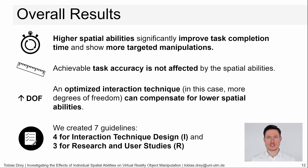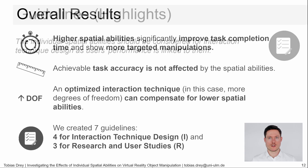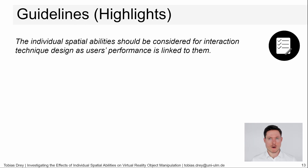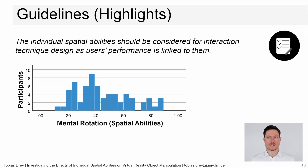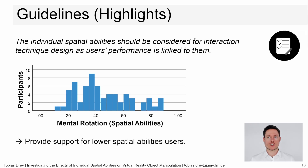Based on our findings, we created seven guidelines, split into four addressing general interaction technique design and implementation, and three for user research. I want to highlight three of them. The first guideline states our main finding: individual spatial abilities should be considered for interaction technique design, as users' performance is linked to them. Despite this being seldom done in the past, our finding indicates that it should be done in the future. The histogram of our participants' spatial abilities shows how widespread they are, and we encourage developers to provide support for users with lower spatial abilities.